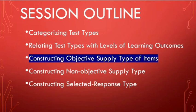Now at this point we shall move to our next subtopic, which relates to constructing objective supply type of test items. We just categorized the different test types — supply type, selected response type with binary choice and multiple choice as examples, and the performance test type. Now we are going to discuss the ways to craft or construct our objective supply type of test items.